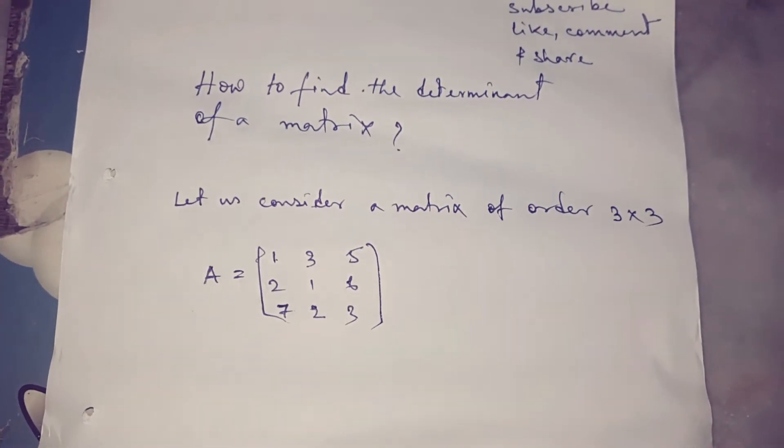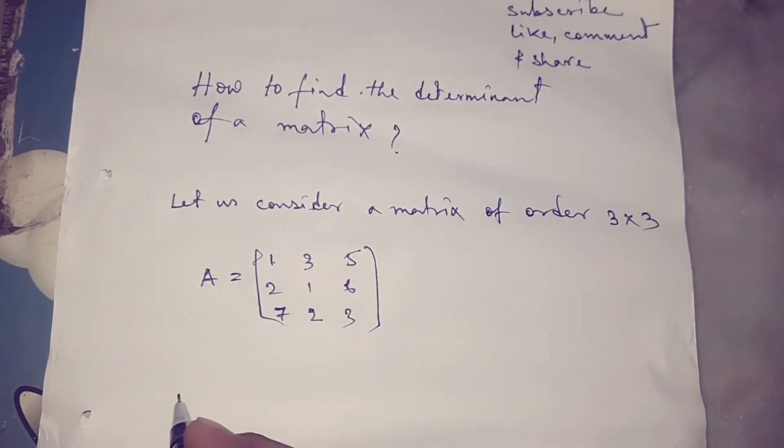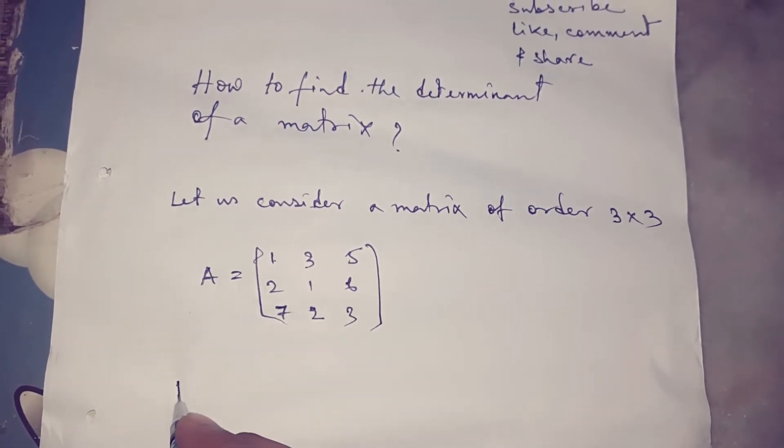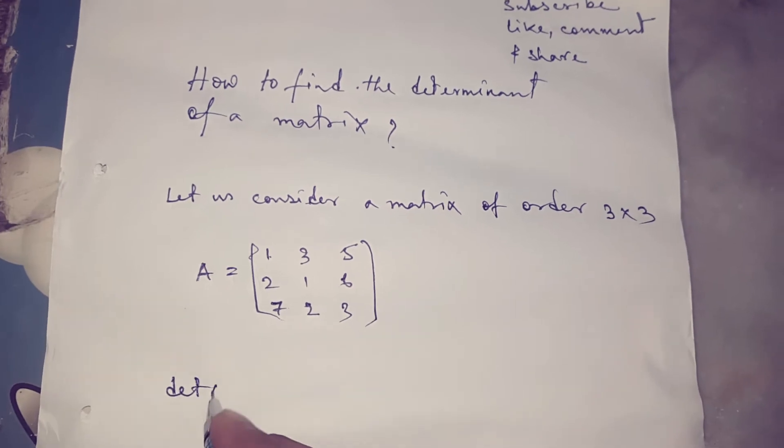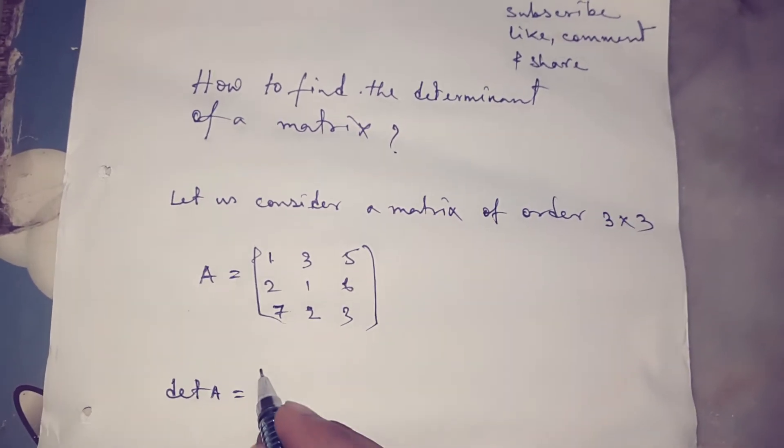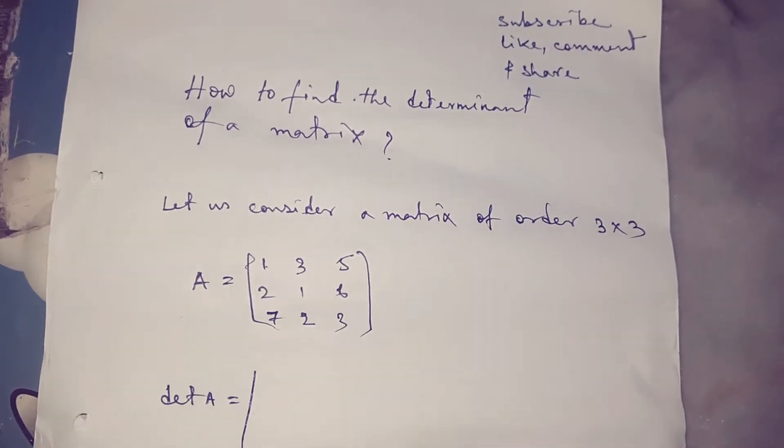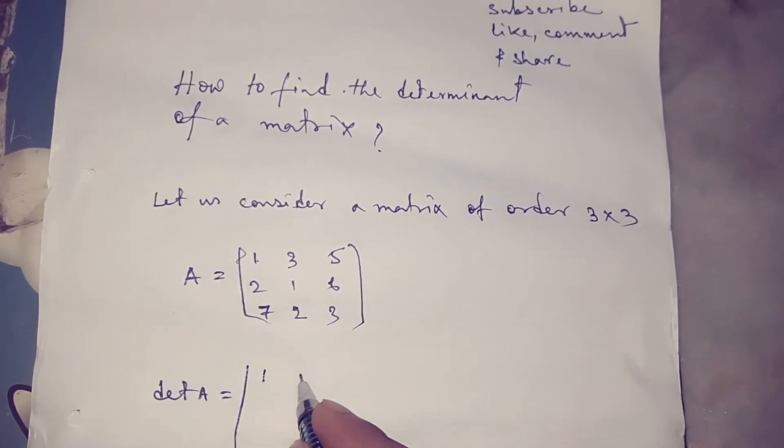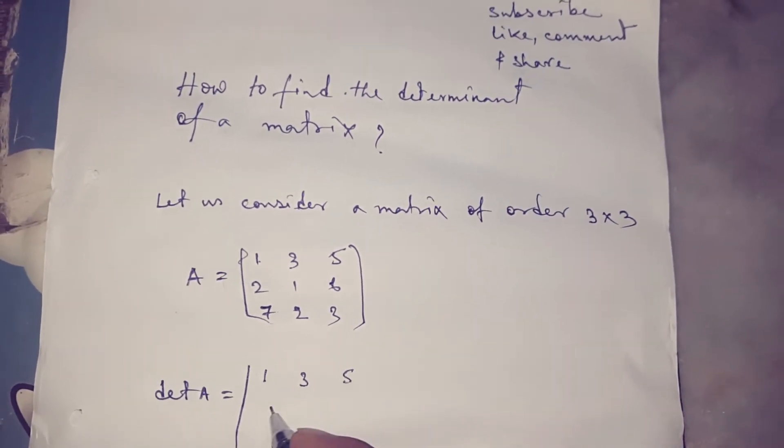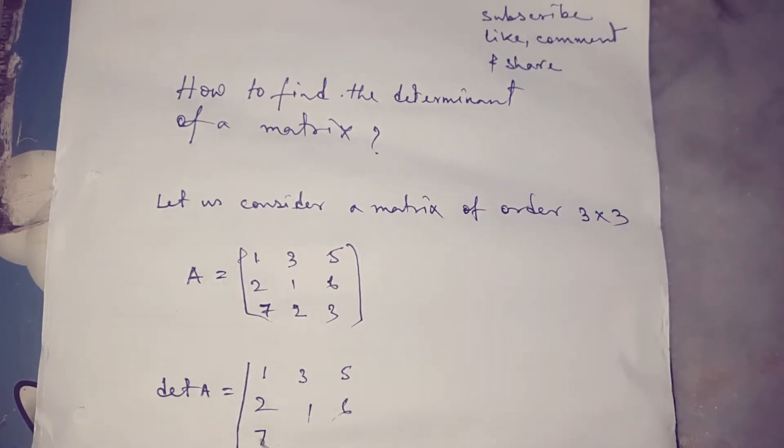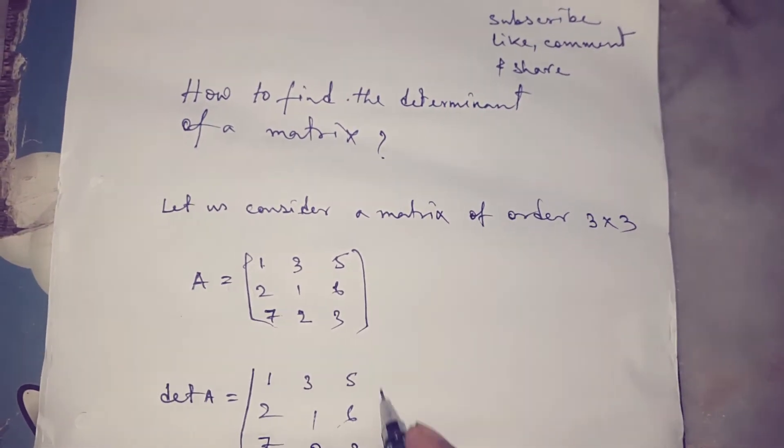Now, finding the determinant of this matrix. So write det A equal to: 1, 3, 5; 2, 1, 6; 7, 2, 3.